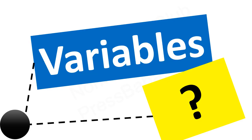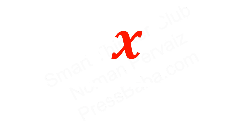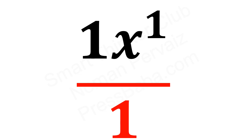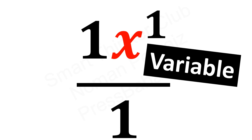Next topic is variables. What are variables? Consider this x variable. It has no power or exponent — the power will be 1 in such a case where there is no power on any variable or value in math. Also it has coefficient 1 and 1 in division. Remember, this x is called a variable.